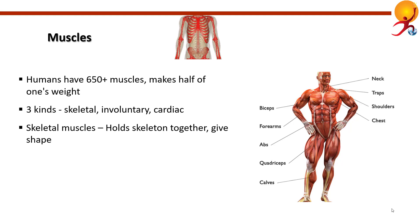Skeletal muscles are voluntary muscles that hold the skeleton together, give the body its shape, and help with everyday movement. They are striated — they look striped — because they are made up of fibers that have horizontal stripes when viewed under the microscope.